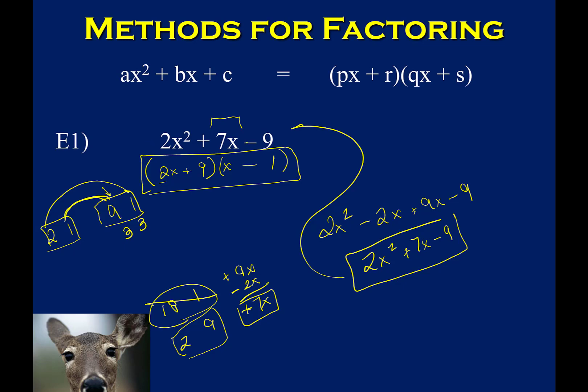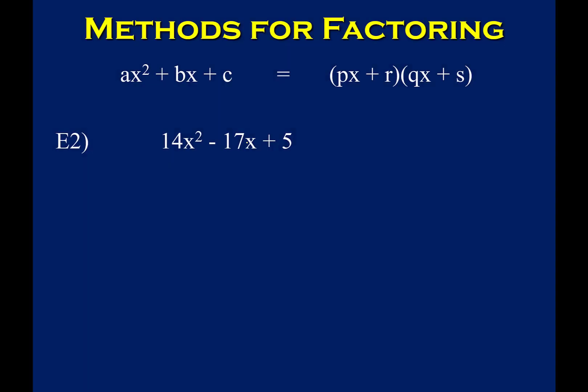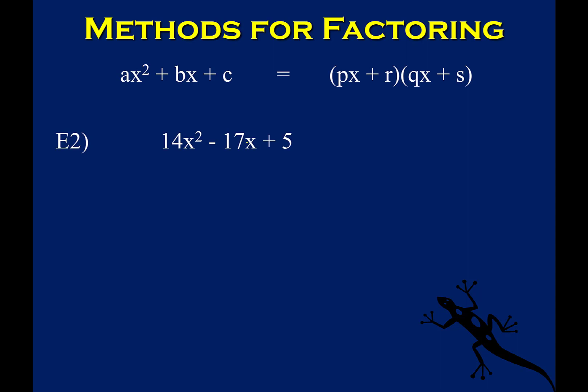Trial and error really does take practice. As you do more examples and practice more, you will get quicker at it. So let's look at another one. Looking at my three terms, there is no GCF between them, so I need to look at the factors of 14 and the factors of 5.